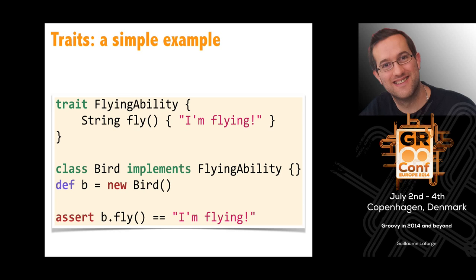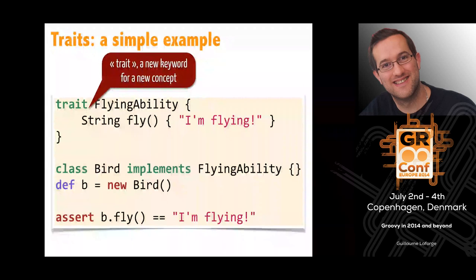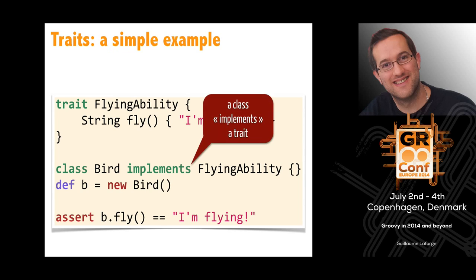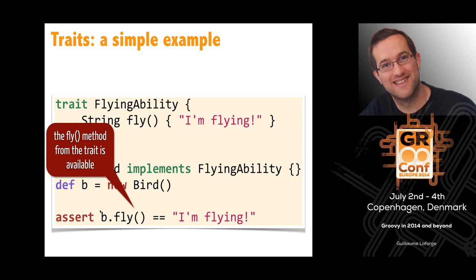Let's start with the first example. I define a trait called FlyingAbility — in terms of syntax it looks like a class; just replace 'trait' with 'class'. We introduced a new keyword: 'trait'. That's been a long time since we introduced a new keyword in Groovy, but this new concept deserved one. A class can implement a trait using the 'implements' keyword, and the bird instantiated has the fly method coming from the FlyingAbility trait.